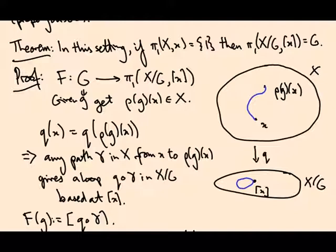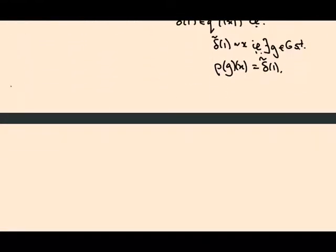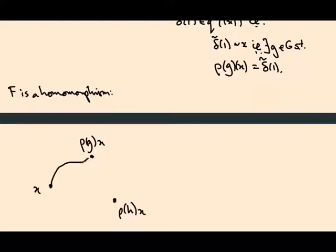So let's look what happens if we concatenate loops. So F is a homomorphism. So here's x, here's ρ(g) of x, here's ρ(h) of x. I pick some paths that I'm going to project down. Let me call that γ_g and some other path over here, let's call that γ_h. I want to relate this to ρ(gh) of x, which is equal to ρ(g)ρ(h) of x. This is a group action.